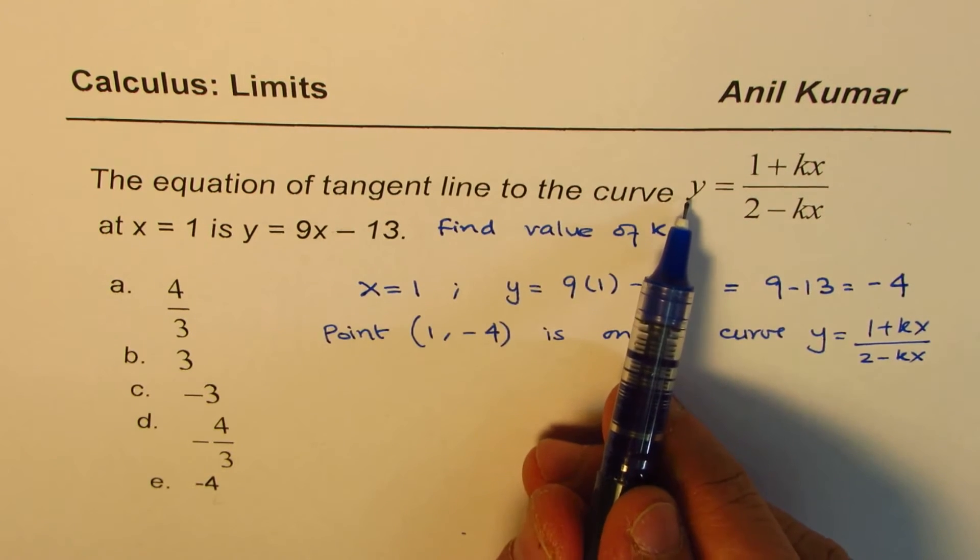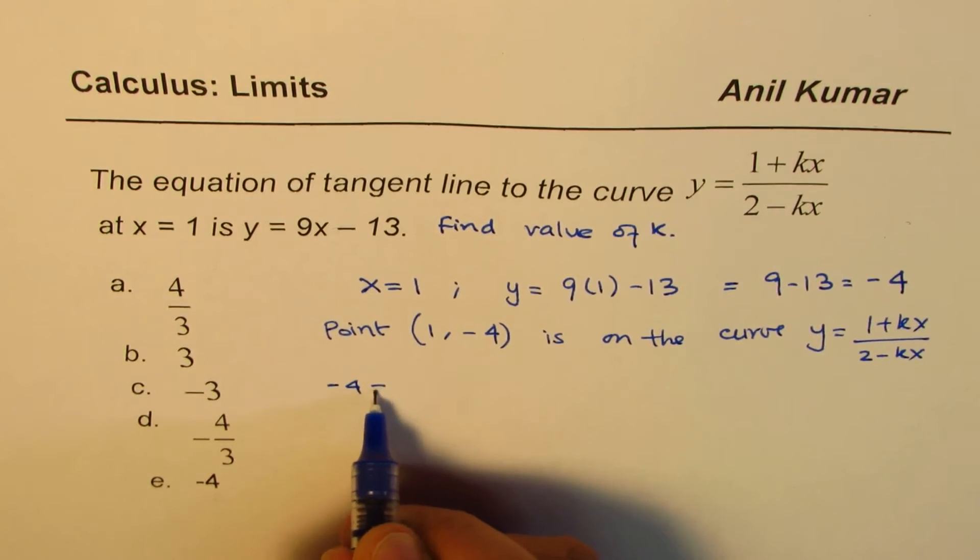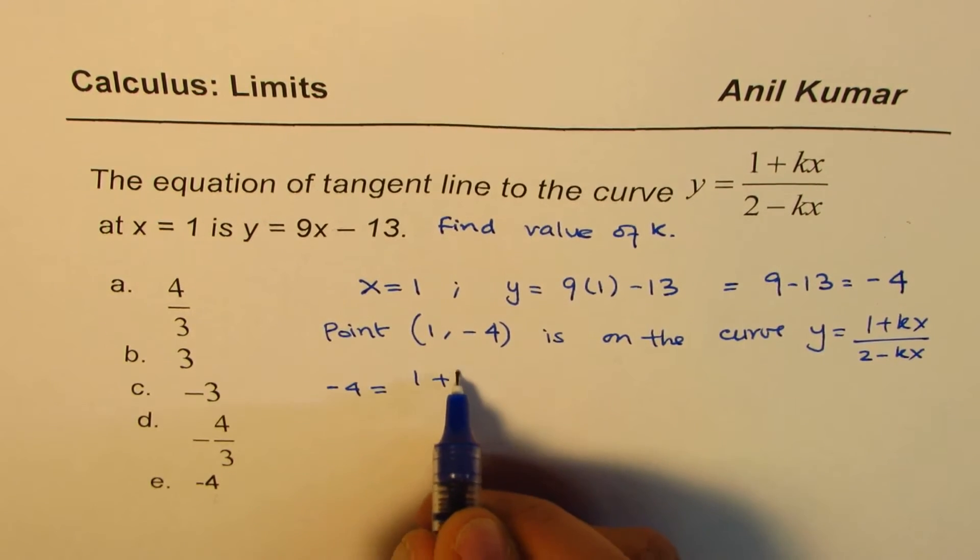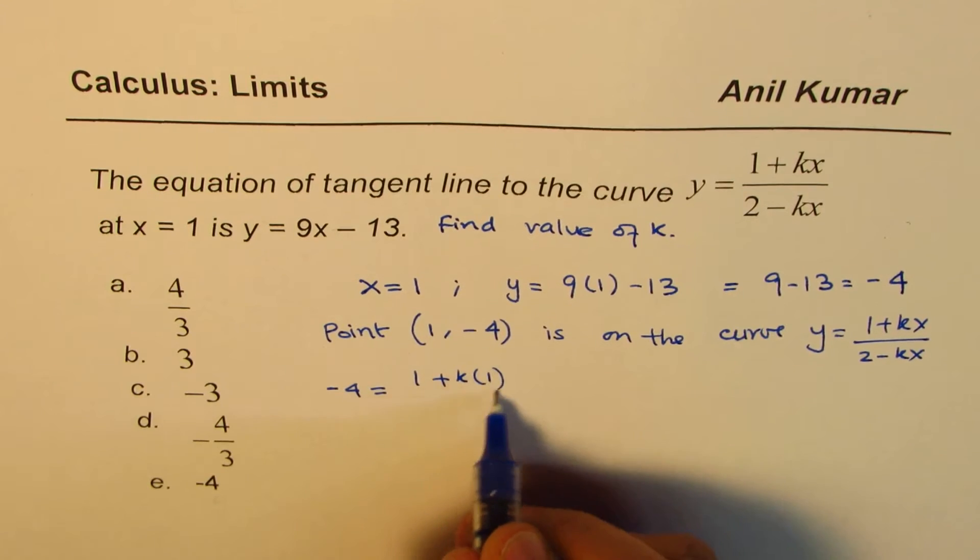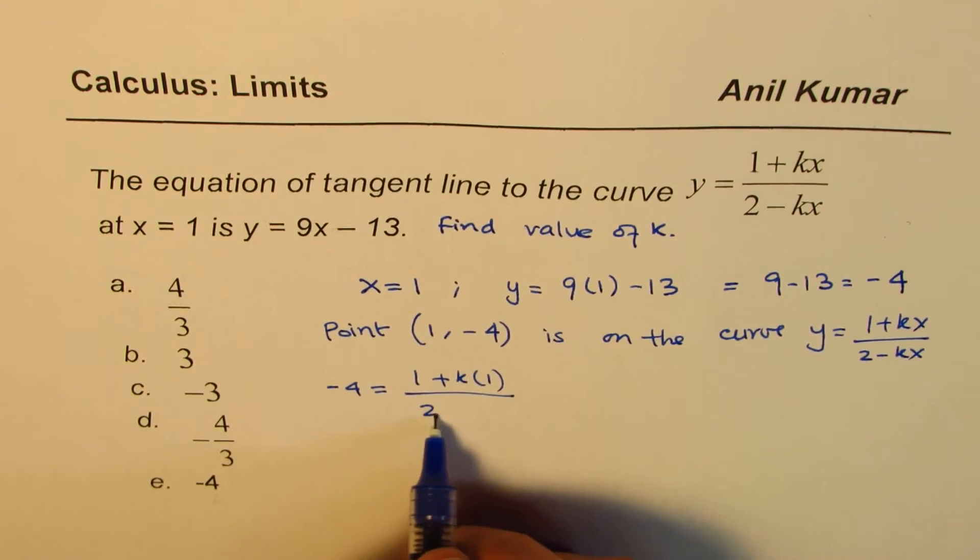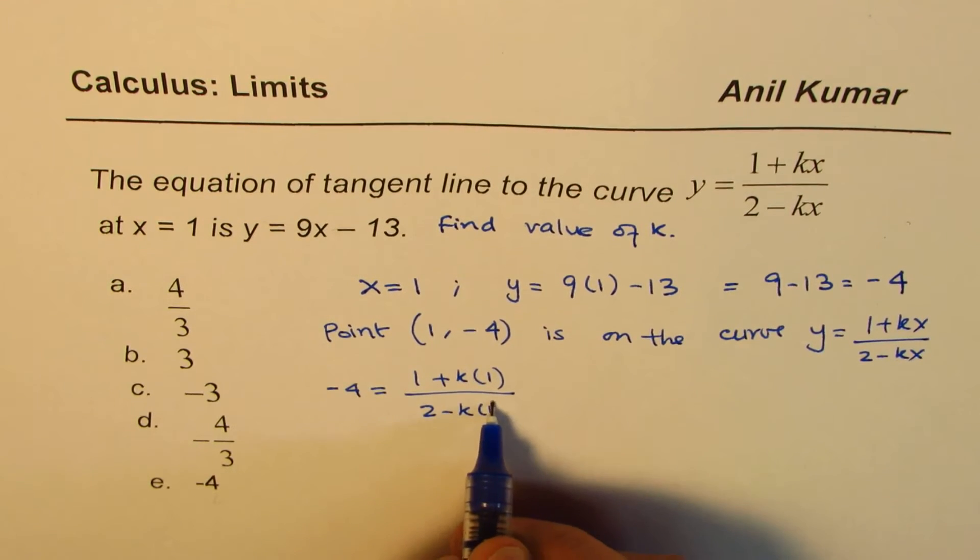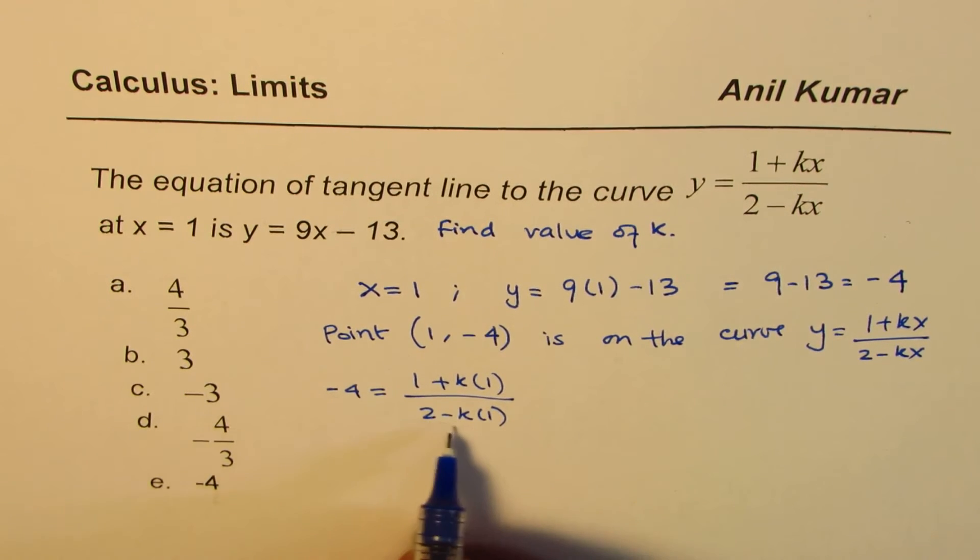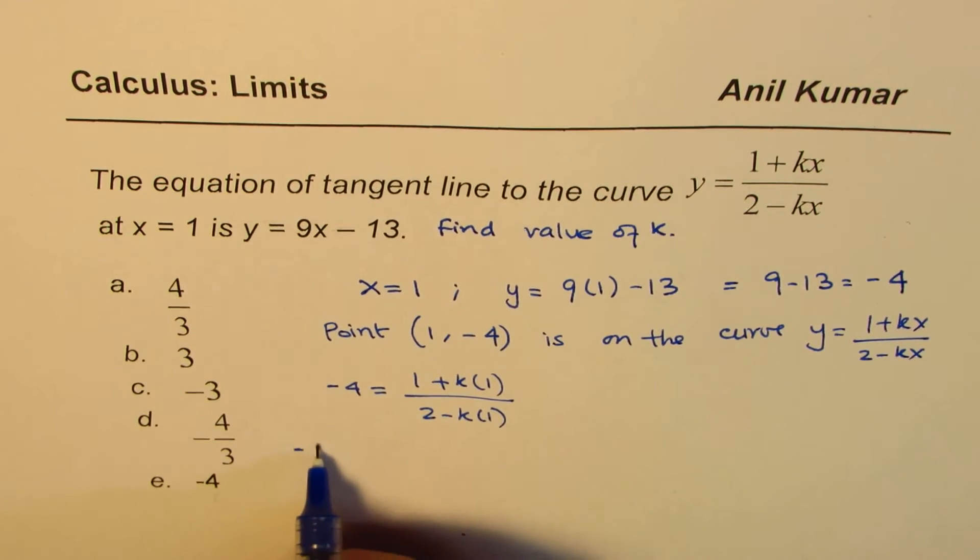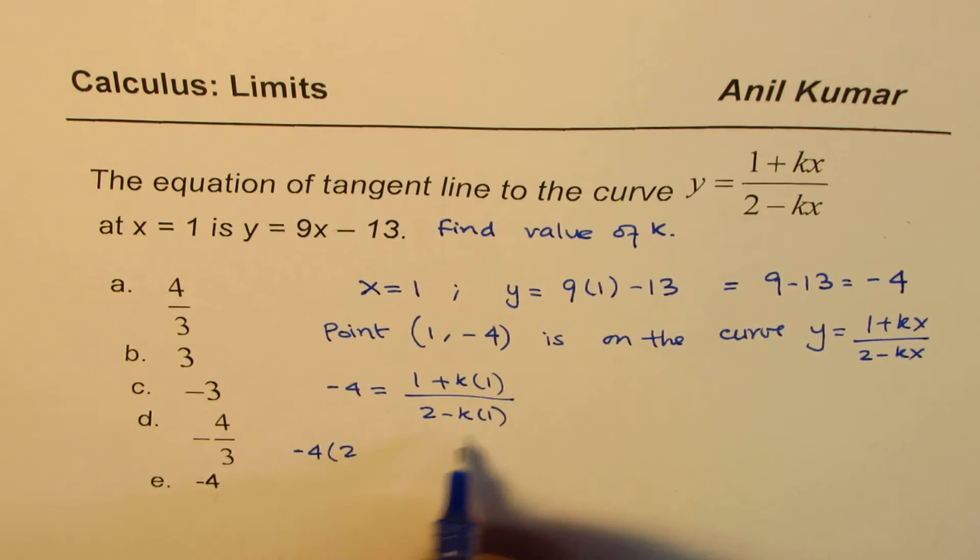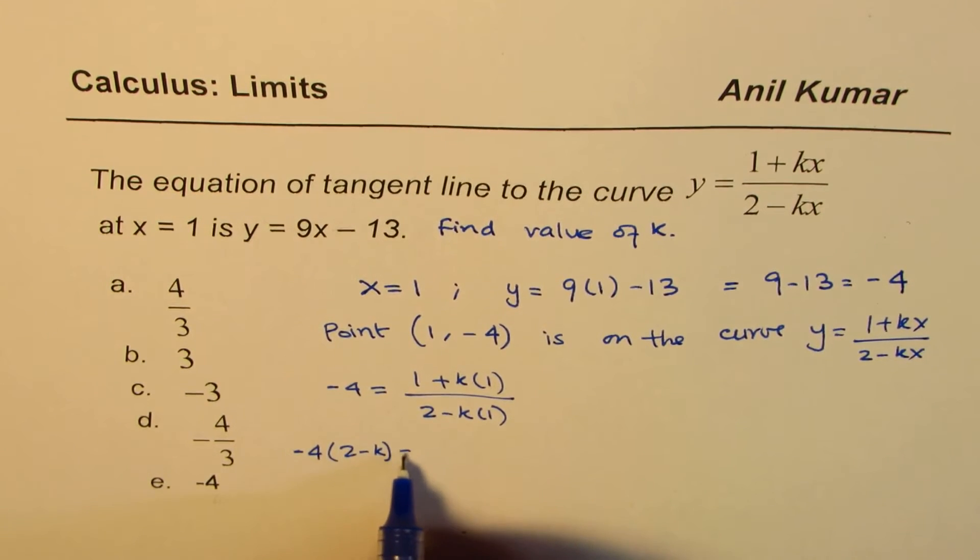We will substitute y = -4. So we write: -4 = (1 + k(1))/(2 - k(1)). Then we can cross multiply: -4(2 - k) = 1 + k.